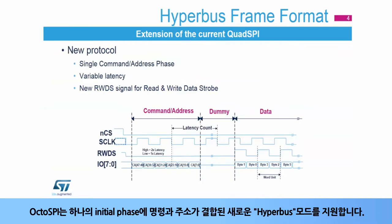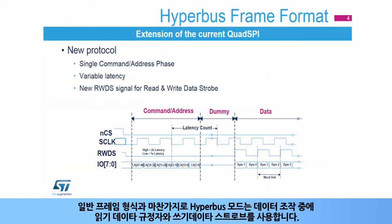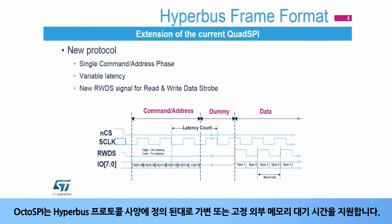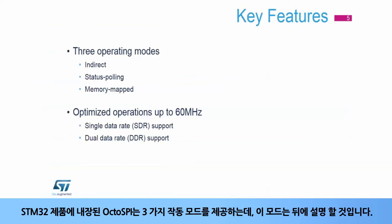The OctoSPI supports the new HyperBus mode, which combines the command and the address in a single initial phase. As with the regular frame format, HyperBus mode also uses a read qualifier and a write strobe during the data operation. The OctoSPI supports variable or fixed external memory latency, as defined by the HyperBus protocol specification.